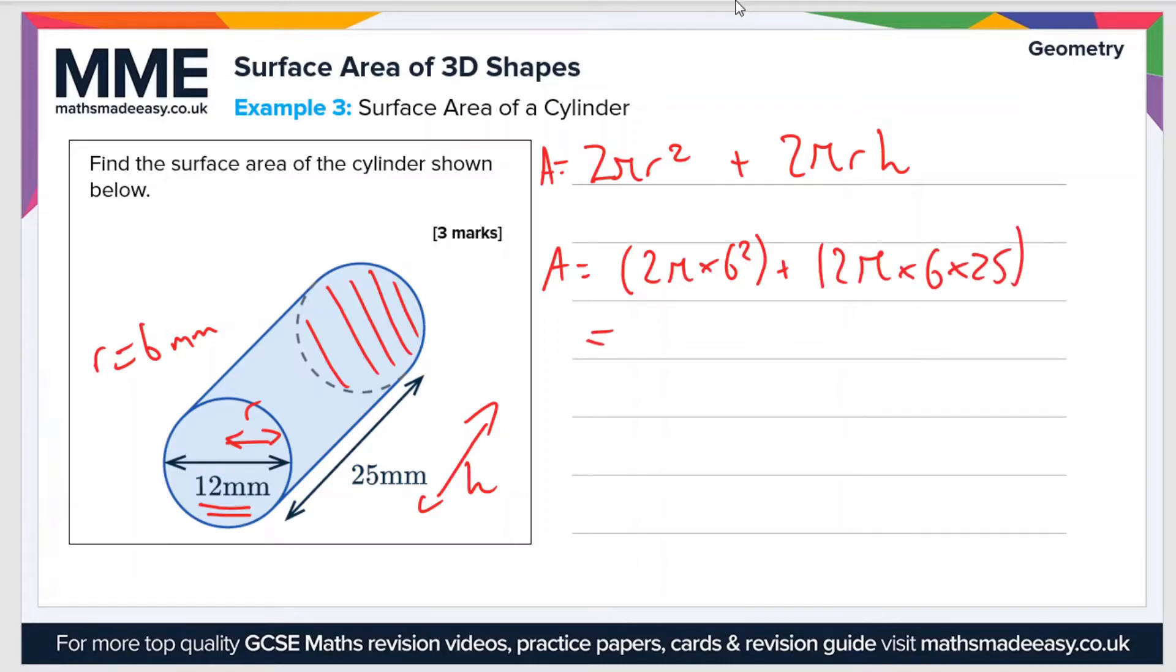So the area is 372π millimeters squared. Now if the question asked us to leave our answer in terms of π that would be fine, or we can convert this to a decimal. So the area is 1168.7 millimeters squared.